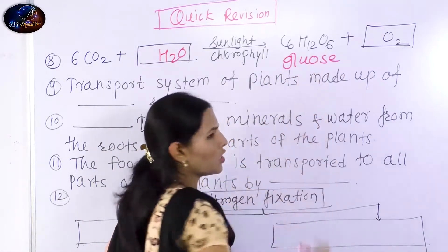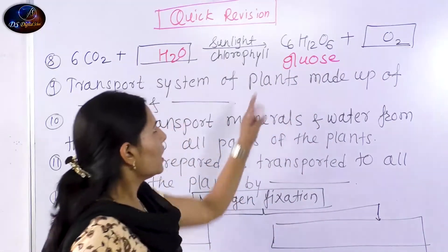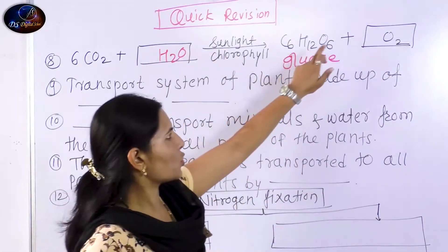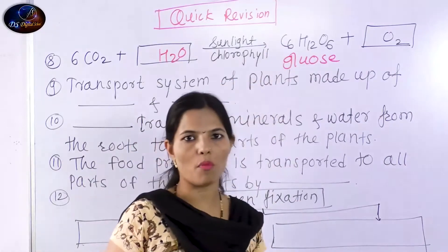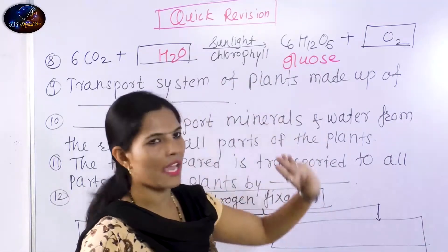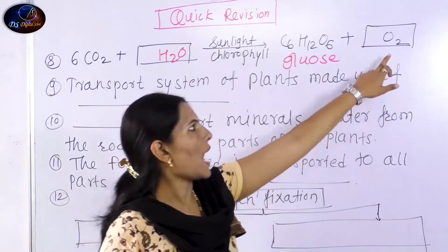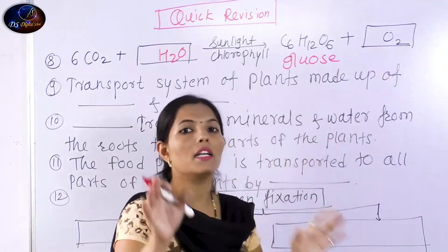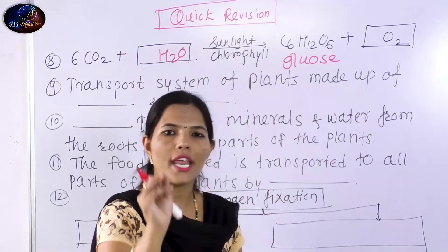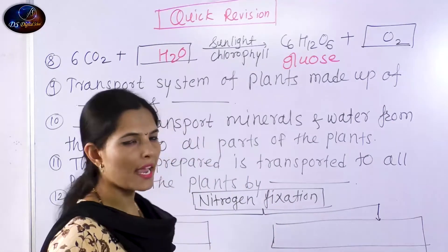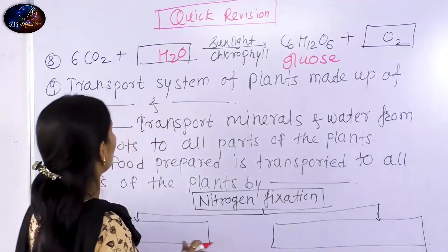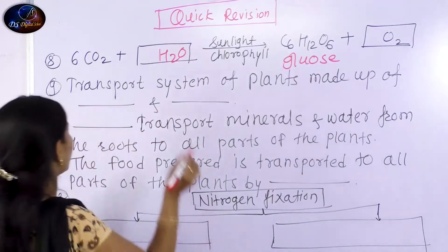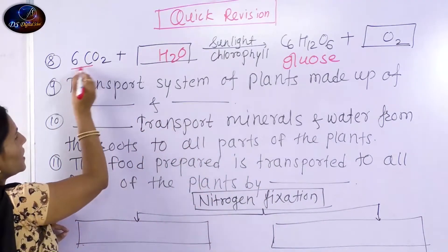And what are the products? Glucose — C6H12O6 — which is a sugar. And the next product is oxygen. But here is your reaction to balance.